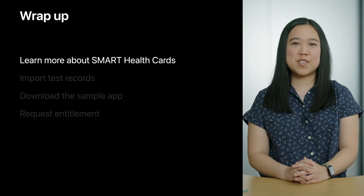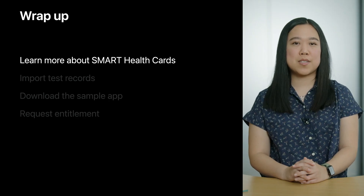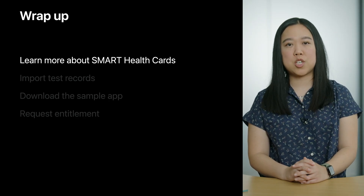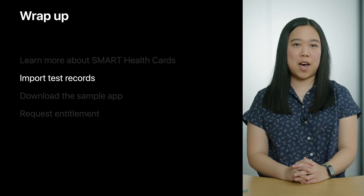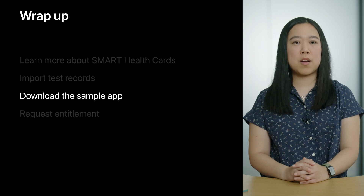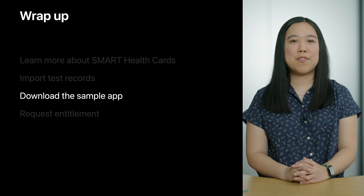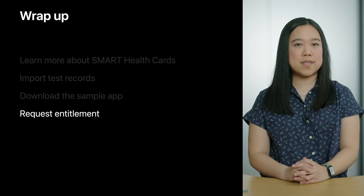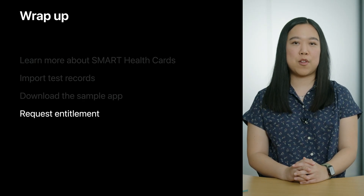Let's review what we've covered today. In iOS 15, building on top of health records, we're bringing the capability to import verifiable records into the Health app and for developers to read this data with a new API. To wrap up, here's what you can do next: check out the SMART Health Card specification to learn more about the verifiable health data ecosystem; import test records into the Health app to try it out yourself; download the sample app, which shows how you can query for and verify those test records; and finally, when you're ready to ship your app, request the healthcare access entitlement for verifiable health records.